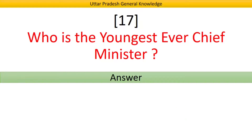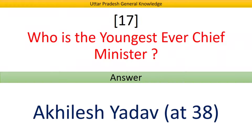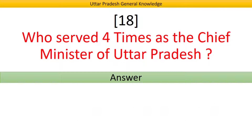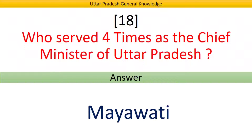Who is the youngest ever Chief Minister of Uttar Pradesh? Answer: Akhilesh Yadav. Who served four times as the Chief Minister of Uttar Pradesh? Answer: Mayawati.